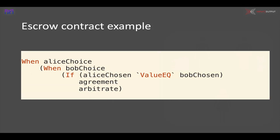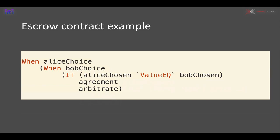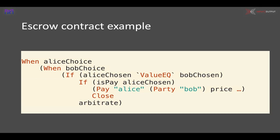Here we can see one way we could write this contract. It uses 'when' to wait for Alice to make a choice, 'when' again to wait for Bob to make a choice, and then 'if' to check whether what Alice has chosen is the same as what Bob has chosen — if so, we do what they've agreed on, otherwise we have to arbitrate. In the first version there's this contract agreement, which we can expand to see what it says.